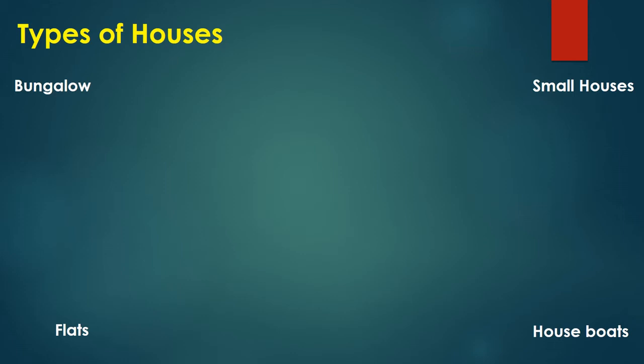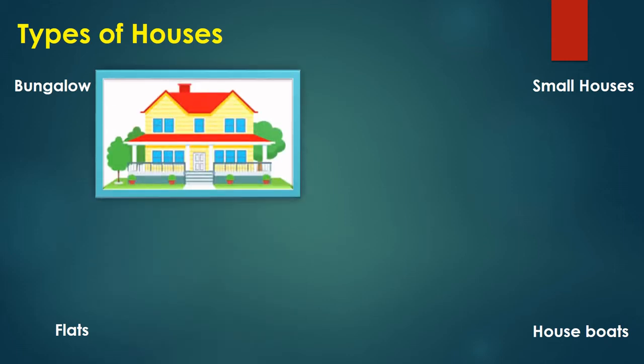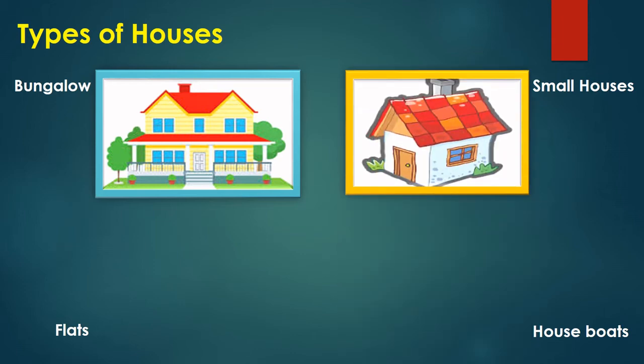Now we will learn about the types of houses. As you all know, everybody has their different type of house, and we always make our house beautiful. As per our syllabus, we need to know about four types of houses. The first one is a bungalow, which is a big house and has more rooms in it. The second one is small houses — it has one or two rooms in it.